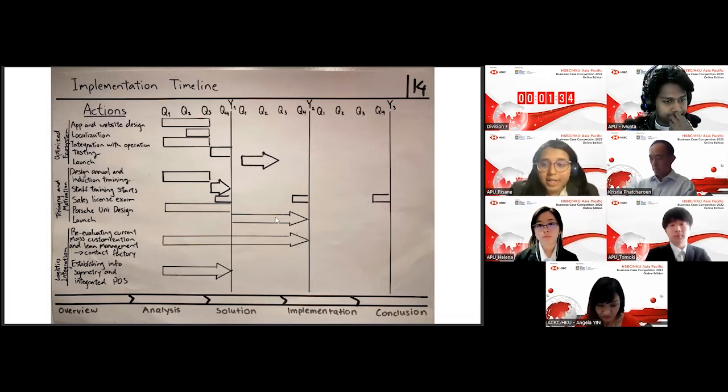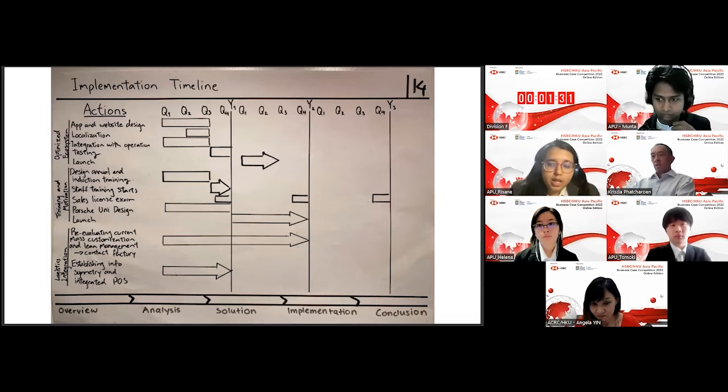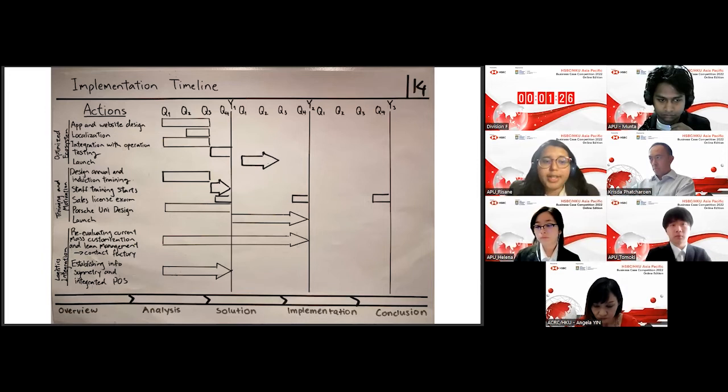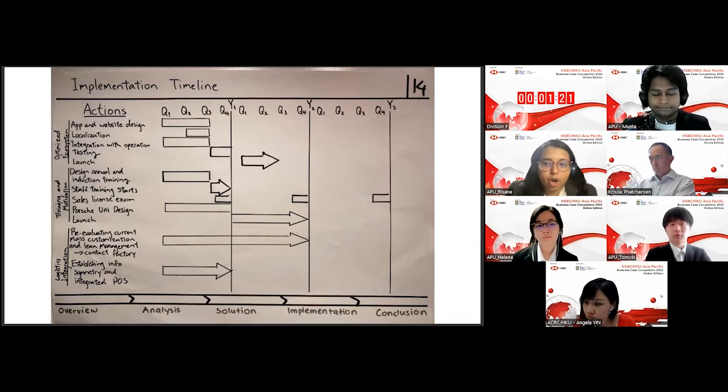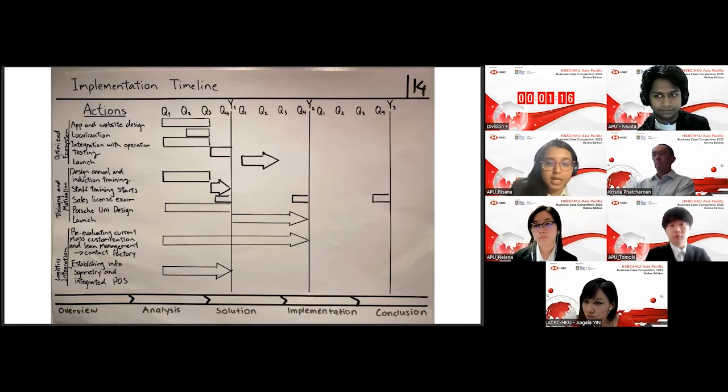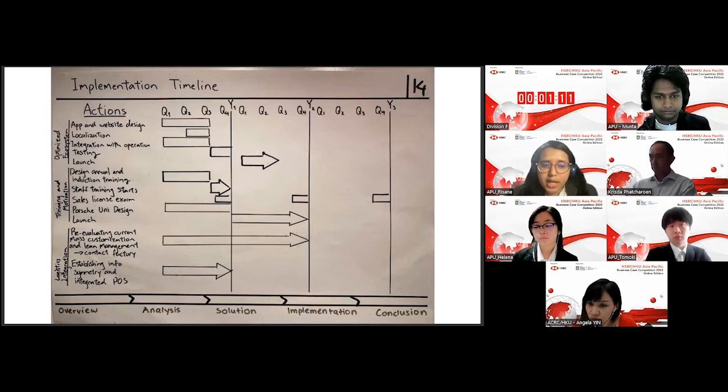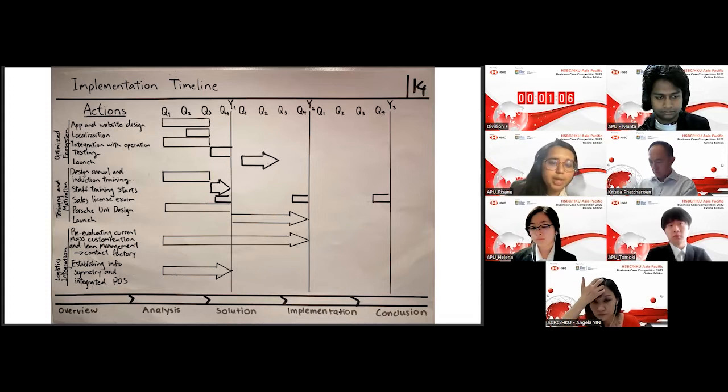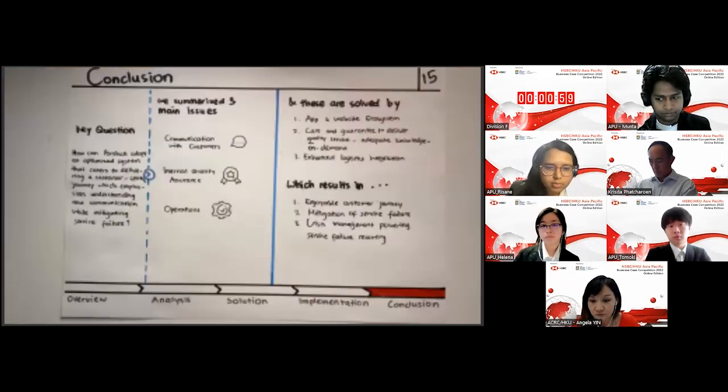All right. So let's look at the logistics one more time. Here, as we have mentioned before, this part would involve contacting the factory to ensure that the mass customization and lean management methods are being catered to the needs of the Hong Kong market. Therefore, this process would need a little back and forth communication and checkups, so it would take about two years to implement. Next, for the information symmetry and integrated POS, this relates again to the app and website design, so therefore, once the app and website design are ongoing, we will also be doing our checks and hopefully we can launch it within one year's timeline.